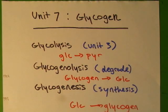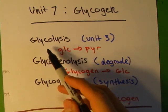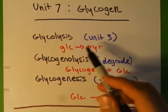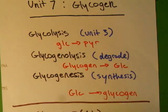Alright, Unit 7: glycogen. First thing to note is these terms because they all kind of look the same. Glycolysis, which is the title of Unit 3, which is glucose to pyruvate. It would help to just review that unit a little bit. It's very similar and it ties in a lot to glycogen.